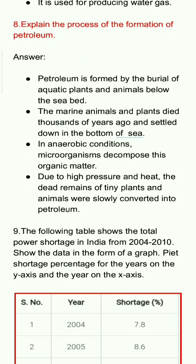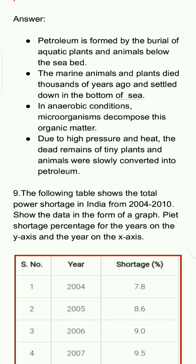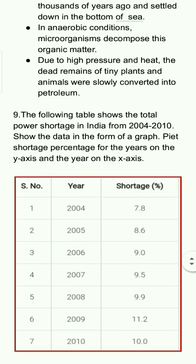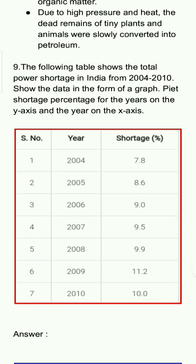Question 9: The following table shows the total power shortage in India from 2004 to 2010. Show the data in the form of a graph with shortage percentage on the y-axis and the years on the x-axis. Data: 2004 — 7.8%, 2005 — 8.6%, 2006 — 9.0%, 2007 — 9.5%, 2008 — 9.9%, 2009 — 11.2%, 2010 — 10.0%.